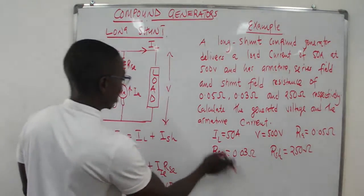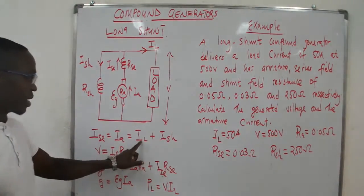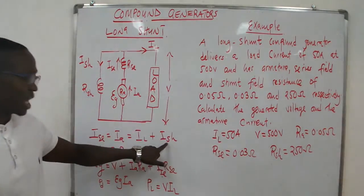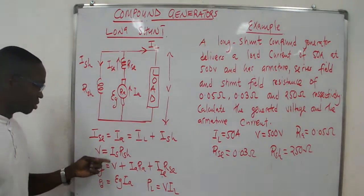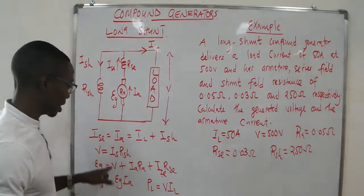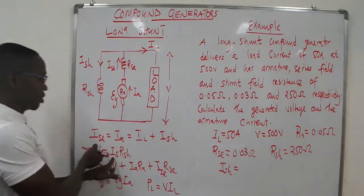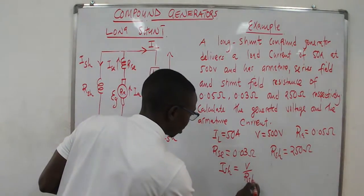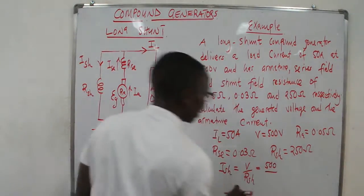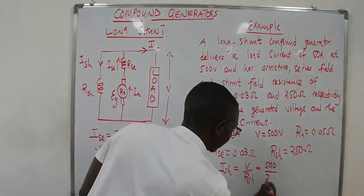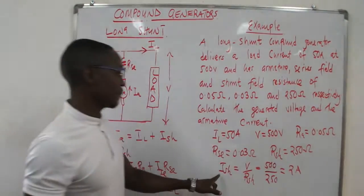To find the armature current, we use the relationship: armature current equals load current plus shunt current. The load current is already given. We find the shunt current from the voltage equation: ISH equals V divided by RSH, which gives us 500 divided by 250, equal to 2 amps. So the shunt current is 2 amps.